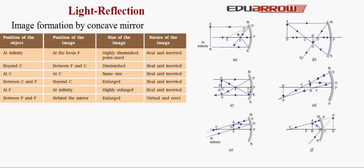When the object is placed between C and F — that is, between center of curvature and focus — the image is formed beyond C. The size of the image is greater than that of the object, and the image is real and inverted. The object AB is placed between C and F, and light rays after getting reflected meet beyond C.